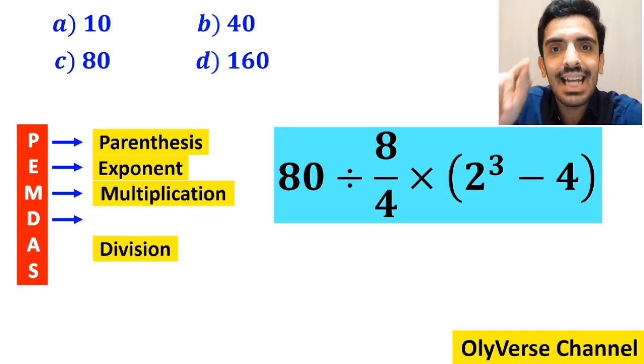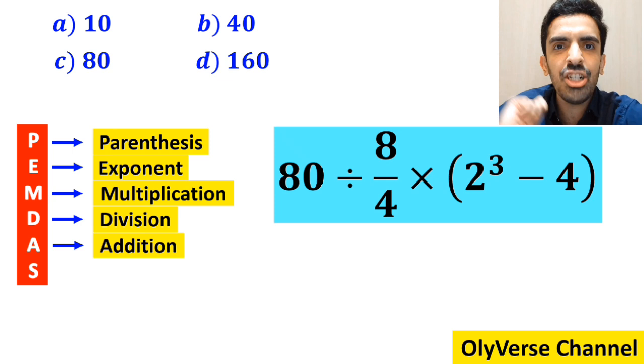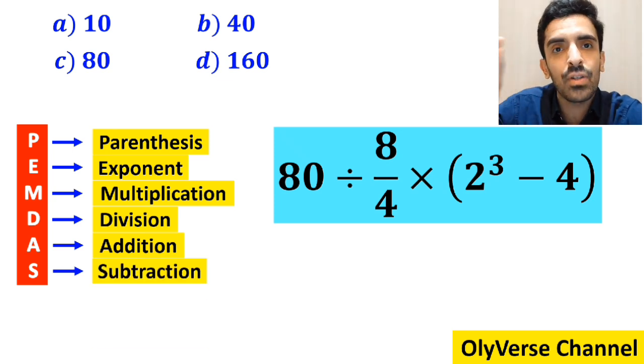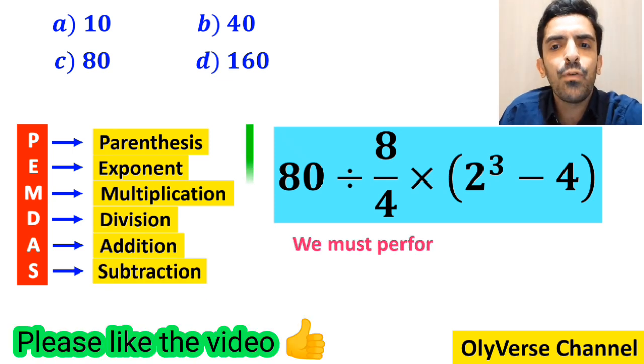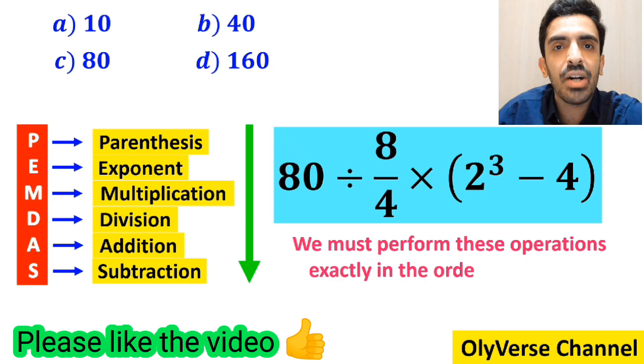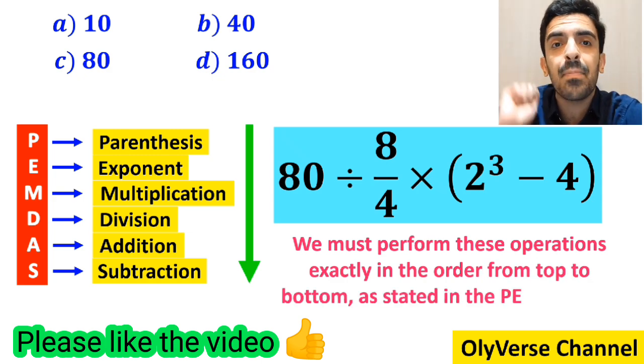In this rule, P stands for parentheses, E stands for exponent, M stands for multiplication, D stands for division, A stands for addition, and S stands for subtraction. We must perform these operations exactly in order from top to bottom as stated in the PEMDAS rule.